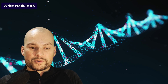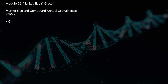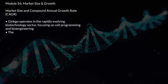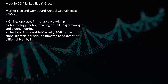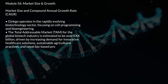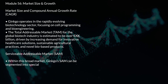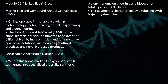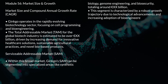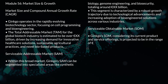Here's another example — module 56, which is the market size and growth. It goes straight to TAM, SAM, and SOM: total addressable market, serviceable addressable market, and serviceable obtainable market. That's also my recommendation because there's always a nice breakdown. Let's see how it handles this.